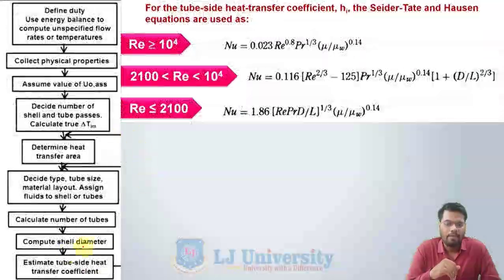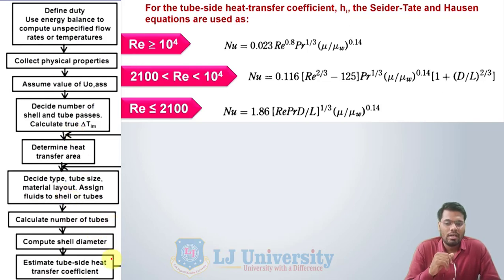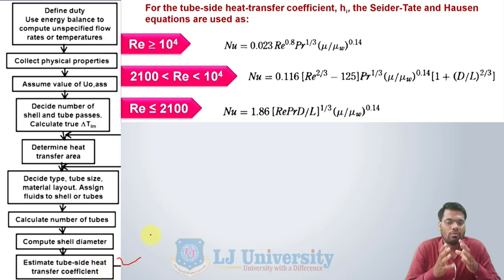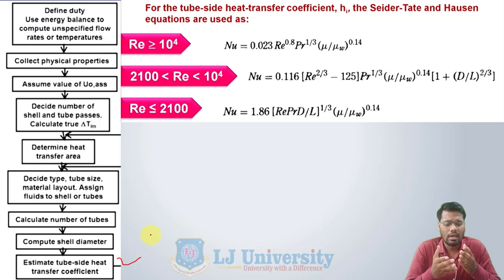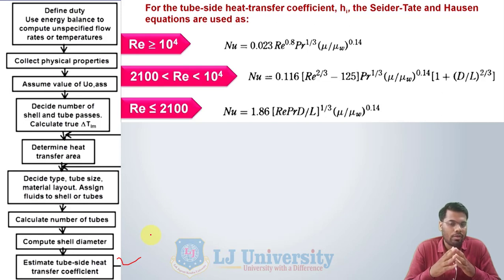Up to this point, we have decided the preliminary data which is required for the design. Now, the next step is to estimate the tube side heat transfer coefficient. In a shell and tube heat exchanger, we have to calculate the tube side heat transfer coefficient as well as the shell side heat transfer coefficient. We have already discussed how to calculate tube side heat transfer coefficient in our double pipe heat exchanger chapter, but let us further revise it.